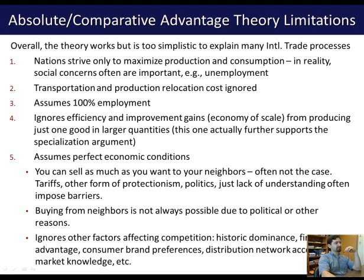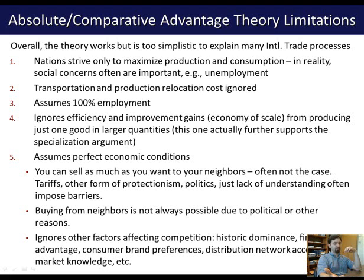It also ignores economies of scale. The more you produce a certain product, the cheaper each unit becomes. When we say it costs Portugal $20 to make a gallon of wine, that may be the cost for the first gallon — but if you make one million gallons, the marginal cost of the last unit will be much lower.